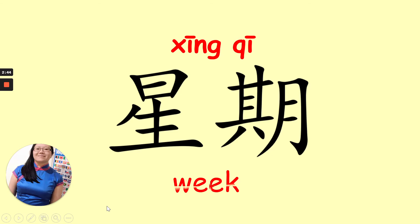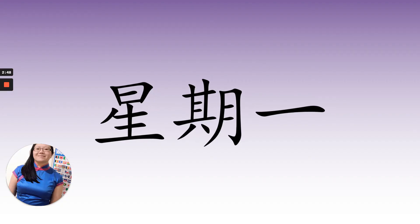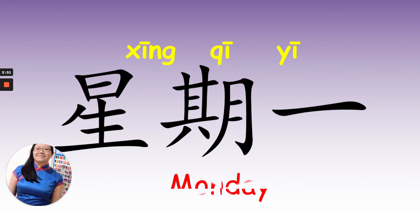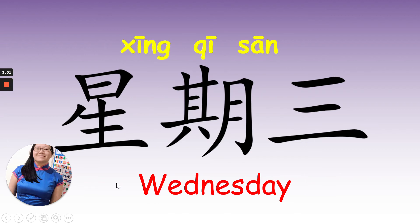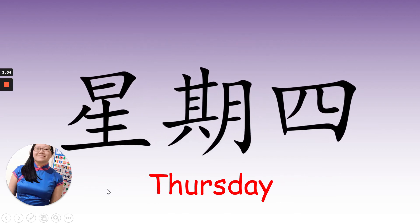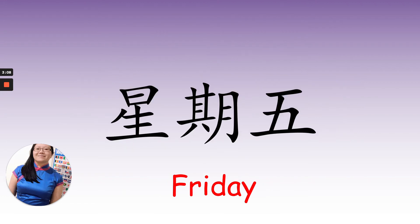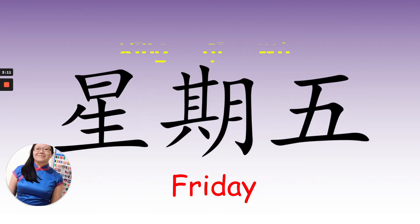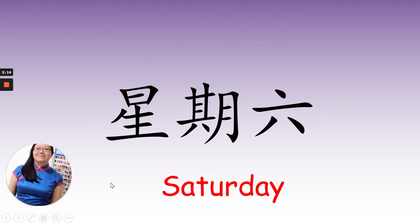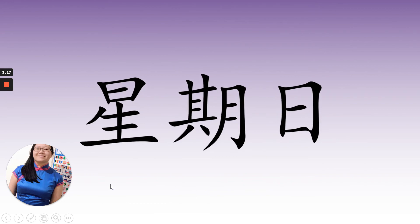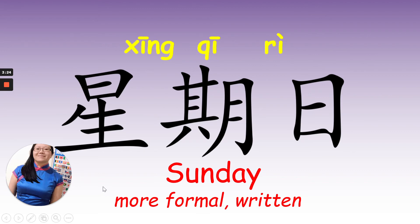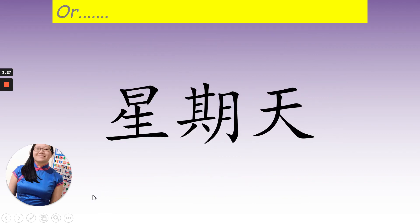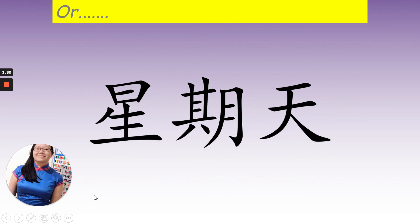And we want to say Monday — it is xing qi yi. Tuesday, xing qi er. Wednesday, xing qi san. Thursday, xing qi si. Friday, xing qi wu. Saturday, xing qi liu. And Sunday is xing qi ri. This is the formal way of saying it. However, there is a different way of saying Sunday, which is xing qi tian.